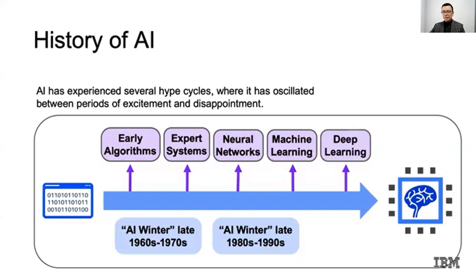In the 1980s and 1990s, we can say there was a second AI winter, a time when development of Artificial Intelligence slowed down.